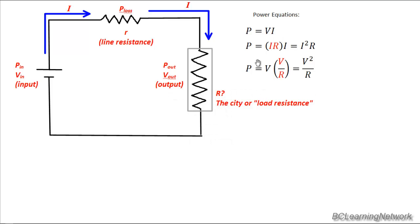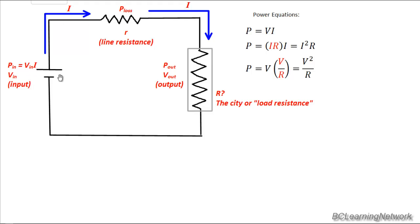Now we just have to decide which equation is appropriate for this question. Typically, we know what the power input is — they might give you 100,000 watts, for example — and they might give you the input voltage. So if you know the input power and input voltage, P equals VI is a good choice for input power. All three equations will work if you have the right information, but using V times I for input power also lets us figure out the current flowing through the circuit. Remember, it's a series circuit where the current is constant throughout.